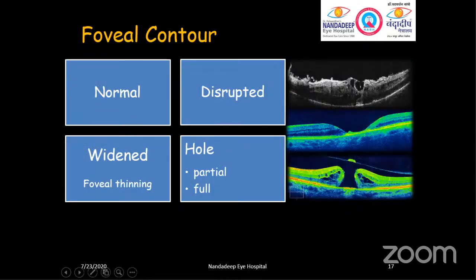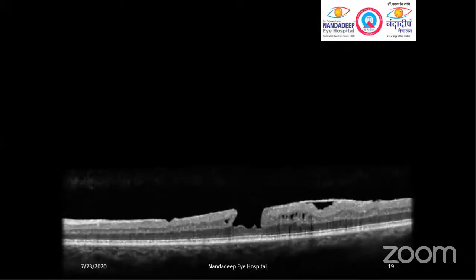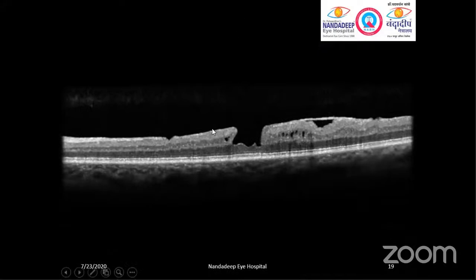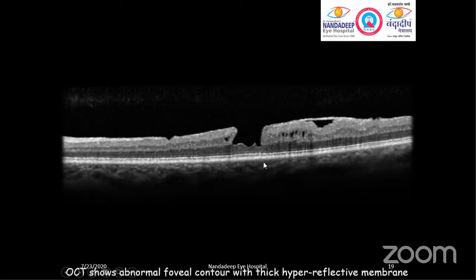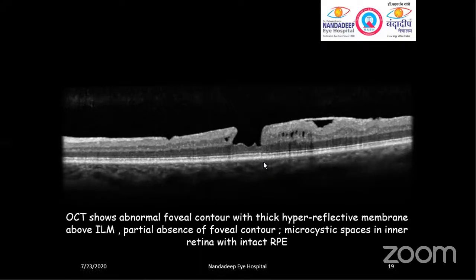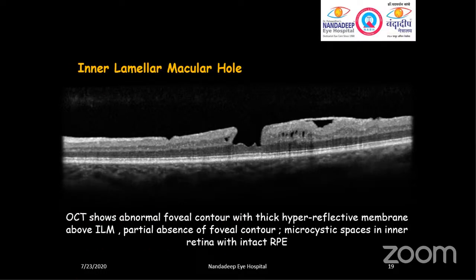Besides vitreo-retinal interface, let's see abnormalities in the foveal contour area. A foveal contour may be normal, disrupted, widened due to foveal thinning, or may have a hole — complete or partial. Here we see the foveal contour is incomplete — there is a partial absence of foveal contour with disruption and a thick hyperreflective membrane over the island. There are a few cystic changes in the inner retinal part, but the outer retina appears intact. The OCT shows an abnormal foveal contour with thick hyperreflective membrane above the island, partial absence of foveal contour with microcystic spaces in the inner retina, but intact outer retina. In conditions like inner lamellar macular hole (a partial macular hole), we see these kinds of pictures.